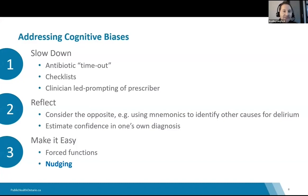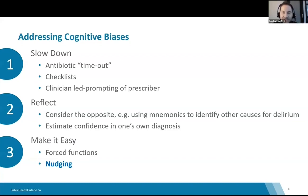Slowing down means taking an antibiotic timeout — maybe 48 to 72 hours later, when you have culture results back. You can reflect and consider switching from intravenous to oral, shortening the duration, or de-escalating therapy. Checklists and clinician-led prompting can also help ensure alignment with best practices. For reflecting, consider the opposite: what is the possibility my initial suspicion was wrong? There are mnemonics to assess patients with delirium to think of other reasons aside from infection.